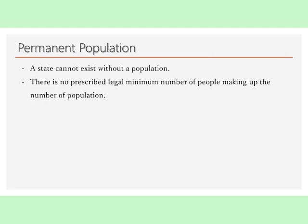Permanent Population: A state cannot exist without a population. The requirement for a permanent population refers to a politically stable community. There is no prescribed legal minimum number of people making up the population. For instance, the Vatican City has an estimated resident population of 750, Nauru has a population of 20,000, and the Maldives Island has a population of 350,000. The criterion of population is not affected if the population of a state is nomadic. Besides, international law does not require the population to be homogenous. The criterion of a stable community refers to a group of individuals living within a certain geographical area.